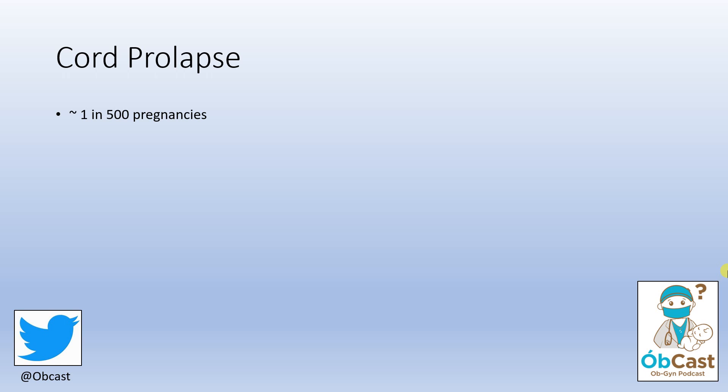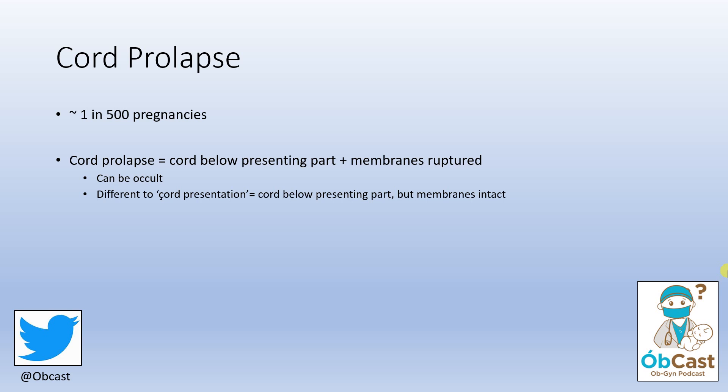Cord prolapse is rare, probably around one in 500 pregnancies. It is when a bit of the cord is below the presenting part — for example the head that's about to come out — and the membranes are ruptured. This isn't always obvious; the most extreme example would be a cord visible outside the vagina, but it can be tucked up inside the cervix. It is different to a cord presentation, which is where the cord is below the presenting part but the membranes are still intact. Cord prolapse is one of the main reasons we do an examination or a fetal heart check after a woman ruptures her membranes.